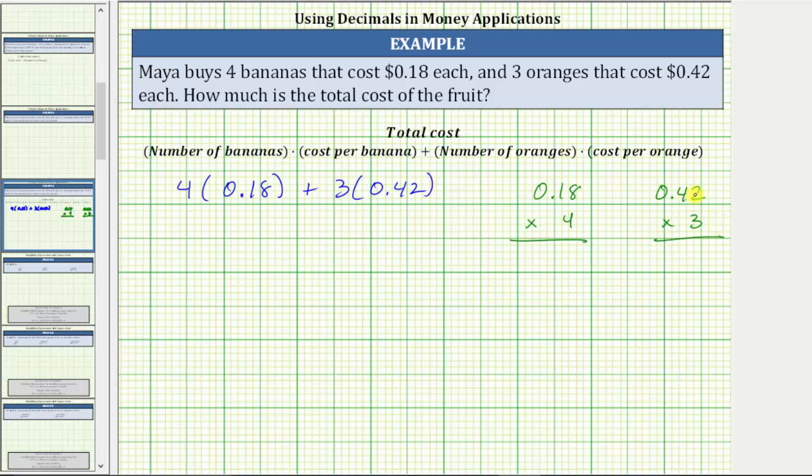Before multiplying, notice how 0.18 has two decimal places and four has zero decimal places. Because two plus zero is two, the product must contain two decimal places.